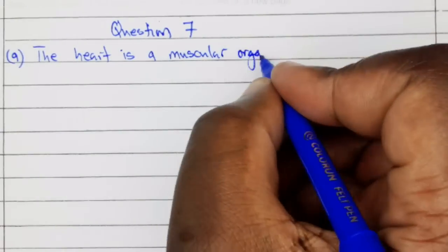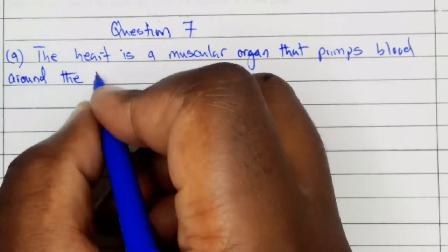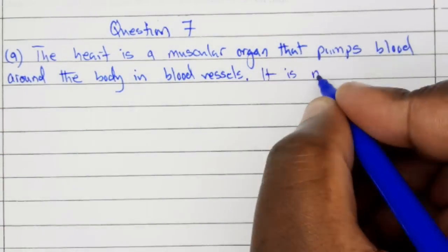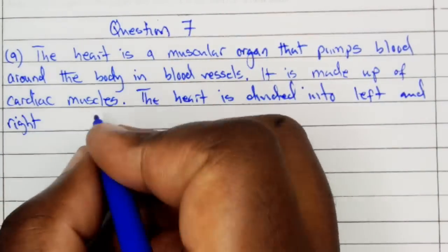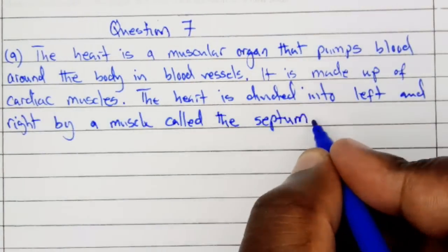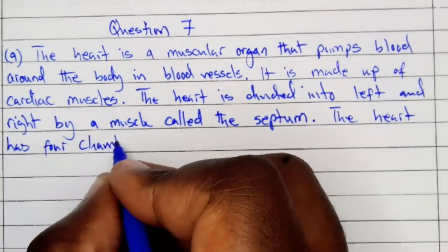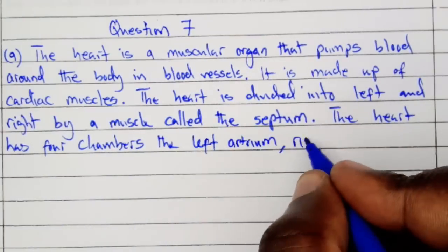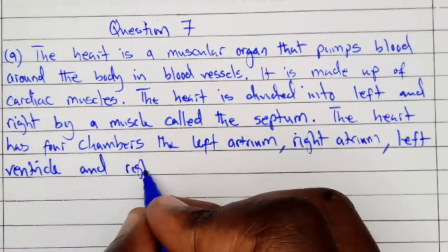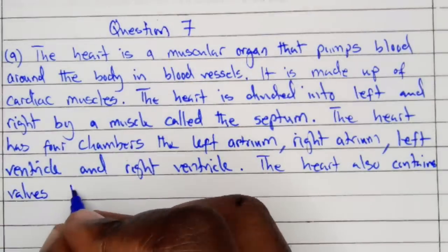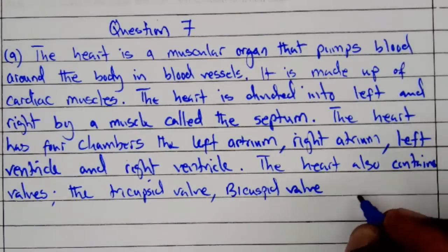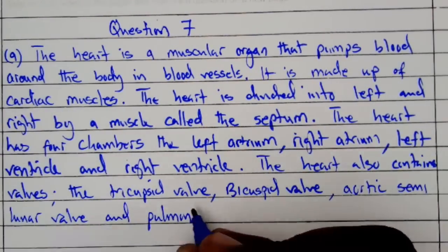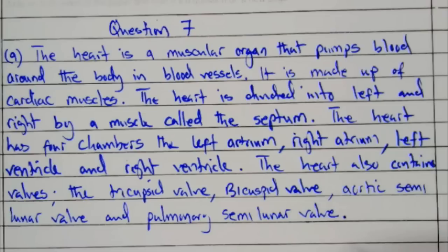Question 7A: The heart is a muscular organ that pumps blood around the body in blood vessels. It is made up of cardiac muscles. The heart is divided into left and right by muscle called the septum. The heart has four chambers: the left atrium, right atrium, left ventricle, and right ventricle. The heart also contains valves: the tricuspid valve, bicuspid valve, aortic semilunar valve, and pulmonary semilunar valve.